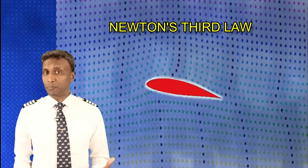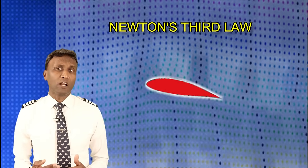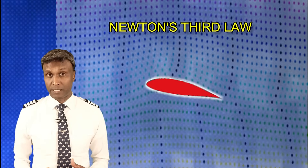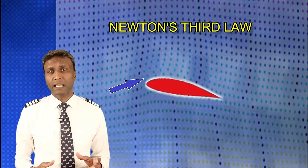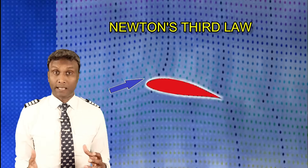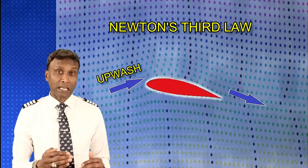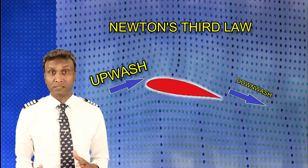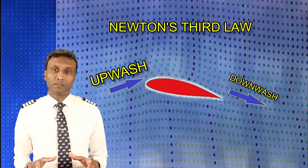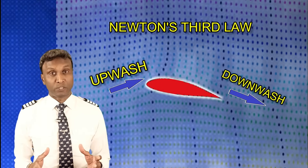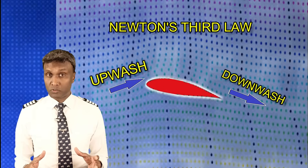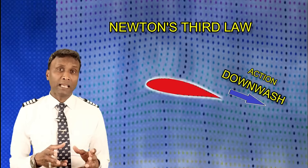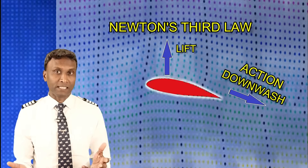If we consider a broader perspective of airflow behavior, the aerofoil influences the air beyond its immediate surroundings. Upstream of the aerofoil, the airflow is directed upwards, known as upwash. Downstream, as it leaves the trailing edge, the flow is redirected downwards, referred to as downwash. This involves a substantial volume of displaced air. The aerofoil plays a crucial role in creating a force on the airflow, resulting in the downwash as the action, and the equal and opposite reaction generating lift.